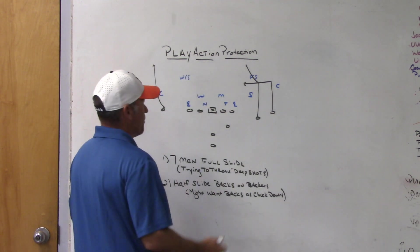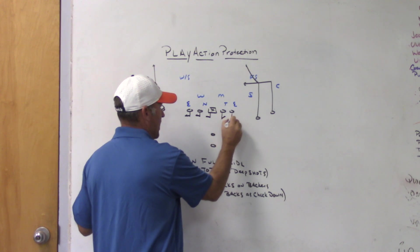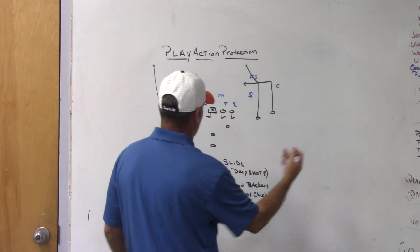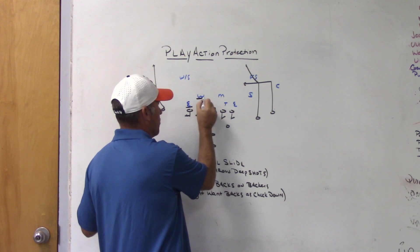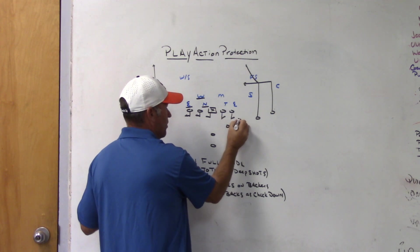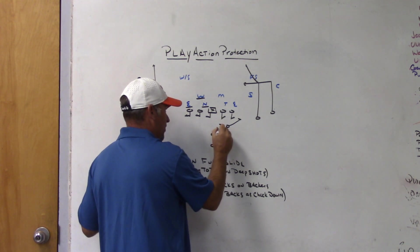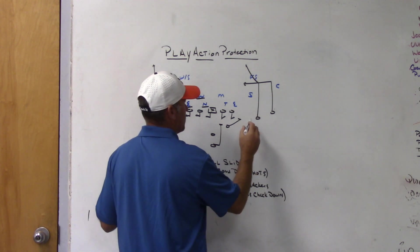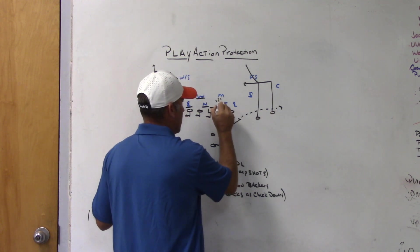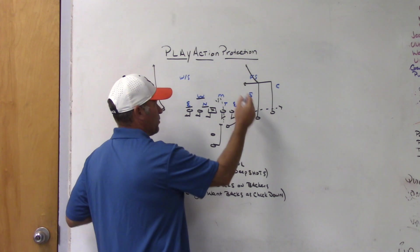So some type of half slide scheme where you would half slide and then man the front side. So the front side guard and tackle, the first uncovered lineman would start to turn into protection. Guard and tackle are covered, so they're manned. Center starts to turn, we turn back. We've got to take care of those three. And now what we're going to do is we're going to put our backs on backers. So we're going to put our sniffer on the nickel or the zam. We're going to play action fake, either up inside zone, power gap, whatever you want. Play action fake and put him on a mic.